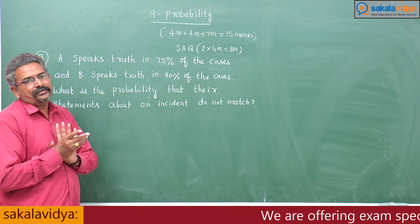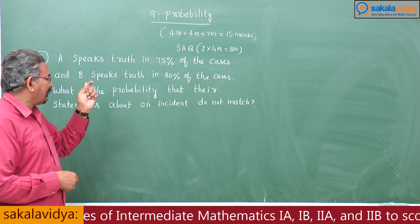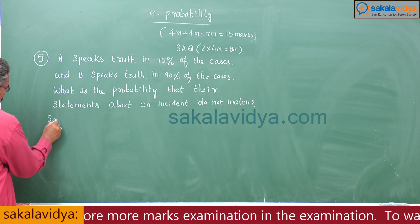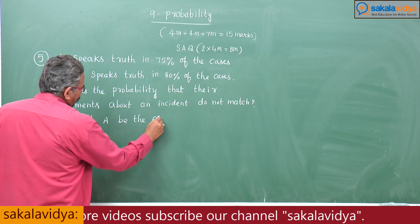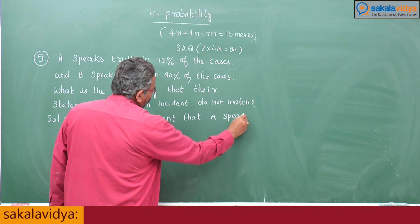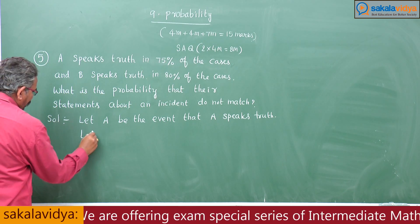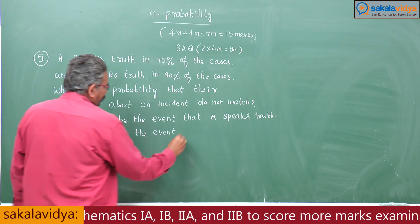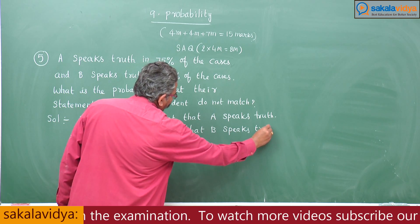The probability we have to find out. Let E be the event that their statements about an incident do not match. We have to calculate P of E. Let A be the event that A speaks truth about an incident.